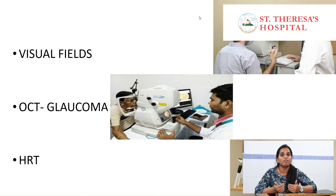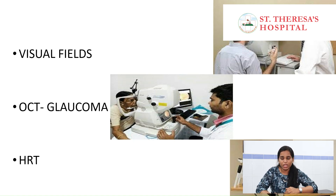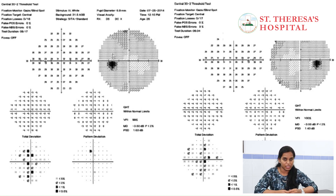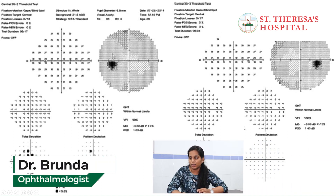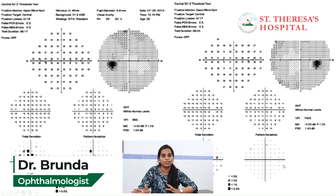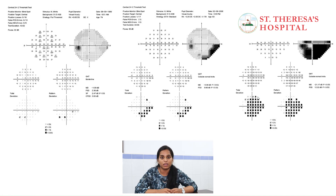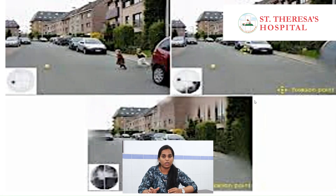We also check the peripheral vision or peripheral visual field. The field test is a simple test done in about 20 minutes for both eyes, but it requires the patient to be cooperative. For normal patients, the result shows a complete visual field. For glaucoma patients who are moderate to advanced, there will be changes in the field — areas of reduced light perception.